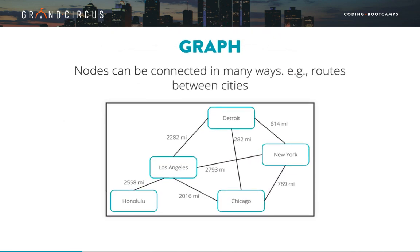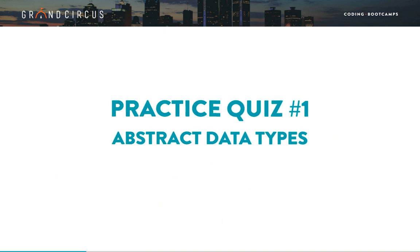Graph. A graph is related to a tree because it has connected nodes, but while a tree must start with a single root node and branch out, the nodes of a graph can be connected in many ways — there is no limit to the connections. A great example of a graph is storing distances between cities: there are multiple ways to get from LA to New York, either directly or by way of Detroit. Sometimes the lines between nodes can also have data attached to them, such as storing the distance between each city.